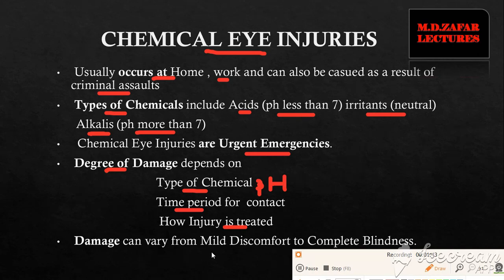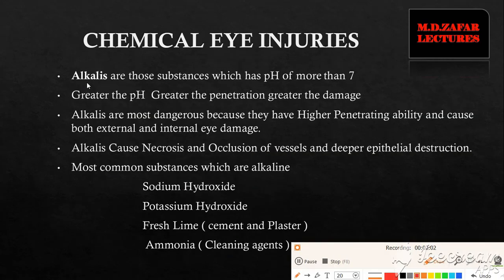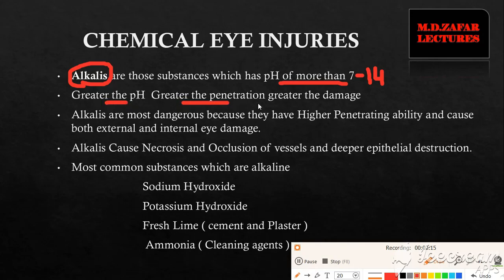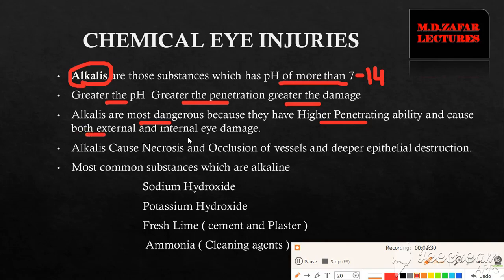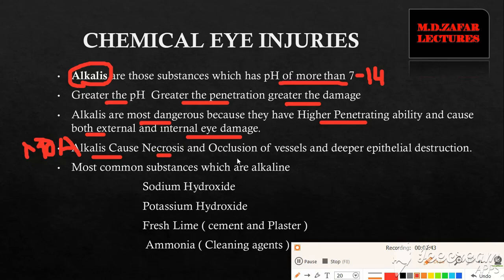The damage can vary from mild discomfort to complete blindness. First, we will talk about alkalis. These are chemical substances which have a pH of more than 7, up to a maximum of 14. Greater the pH, greater the ability to penetrate towards the deeper structures, and greater the damage it will cause. Alkalis are the most dangerous amongst all chemicals because they have high penetrating ability and cause both external as well as internal damage. The mechanism of action of alkalis is that they cause necrosis and occlusion of the vessels and deeper epithelial destruction.